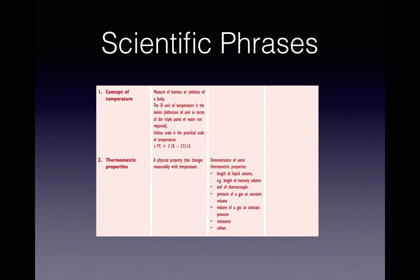Now I got some more. So under the concept of temperature and thermometric property, specifically thermometric property, there's the definition: physical property that changes measurably with temperature. And also the concept of temperature is the measure of hotness and coldness of a body. They're just definitions. And here are some more.